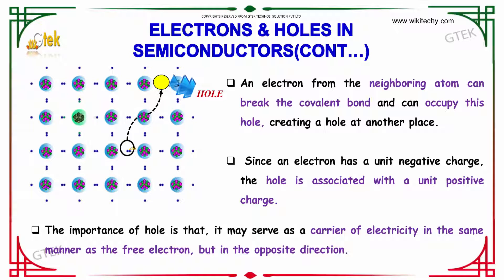Since the electron has a unit negative charge, the hole is associated with a unit positive charge. The importance of the hole is that it may serve as a carrier of electricity in the same manner as a free electron, but in the opposite direction.